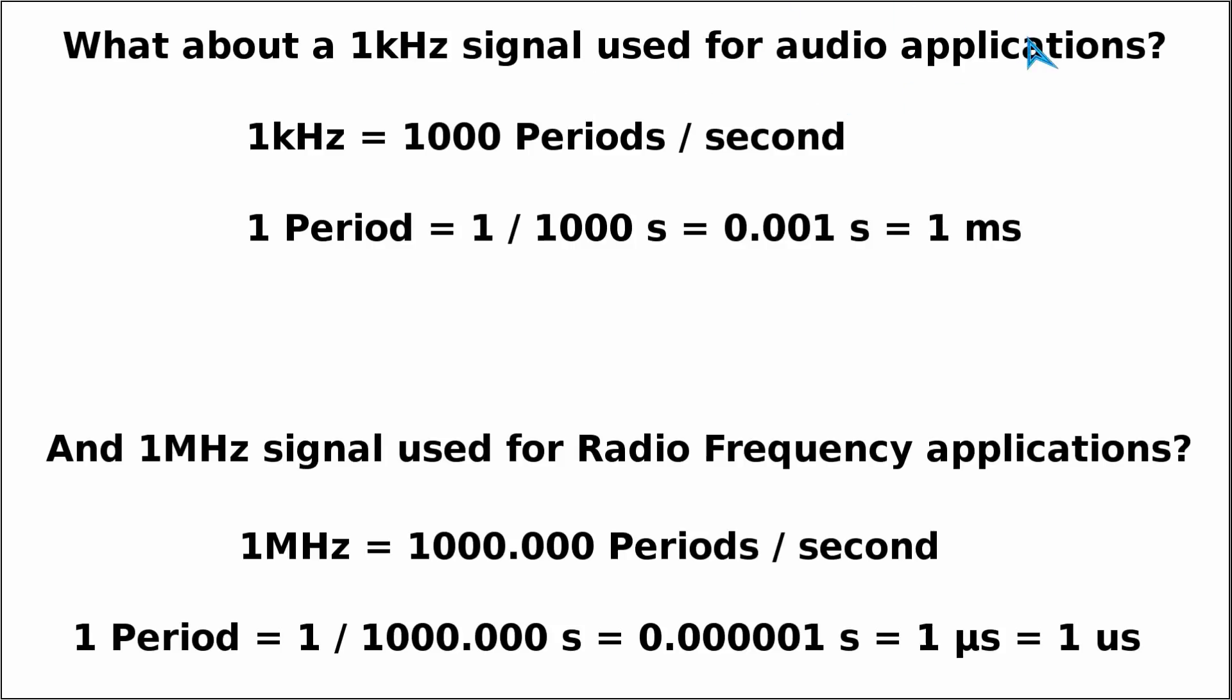Whenever we're dealing with audio applications, the frequency will be in the range of several kilohertz. The kilo in electronics stands for thousand, so we have one thousand periods over a single second. This means a period will be only 1/1000 second long, so 0.001 second. As you see, we have so many zeros that it's easier to express it in terms of milliseconds, where m stands for milli.